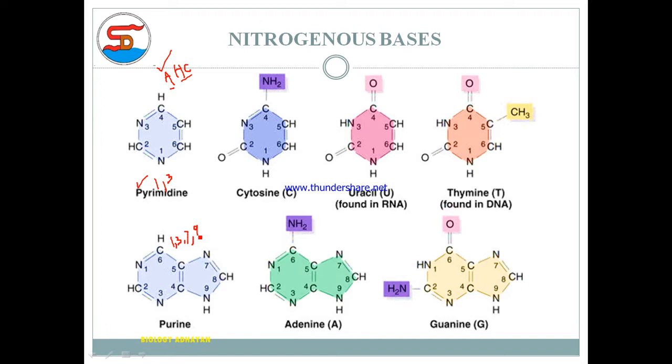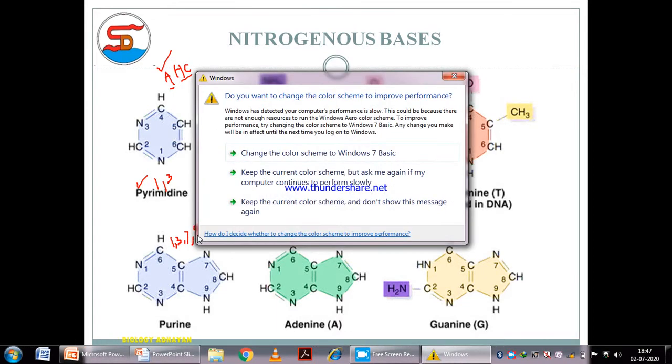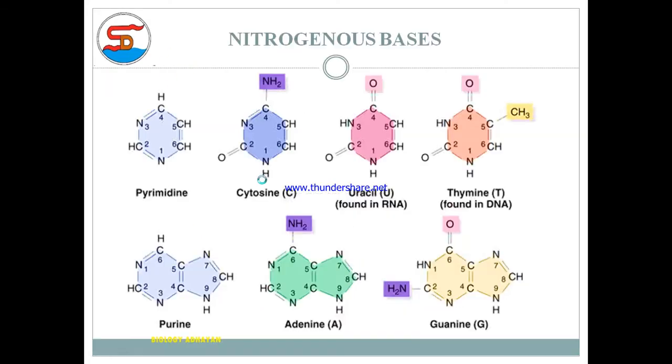Pyrimidines have a six-membered ring with nitrogen at positions 1 and 3, and carbon at the remaining positions. If you remove nitrogen from these positions and replace them with carbon, you get a benzene structure. That particular structure is called pyrimidine.